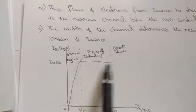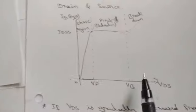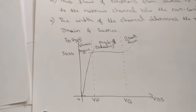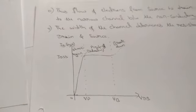If VDS is gradually increased from zero, ID also increases because the channel behaves as a resistance obeying Ohm's law. If VDS is further increased, ID begins to level off until the pinch-off or saturation region, where current remains relatively constant. When VDS exceeds VB, breakdown takes place and ID rises sharply, as shown in the characteristic curve.